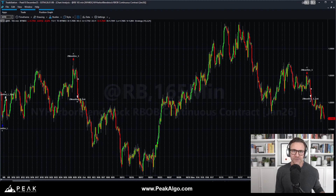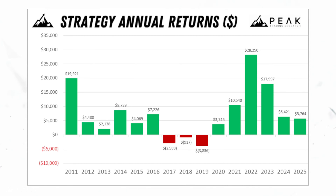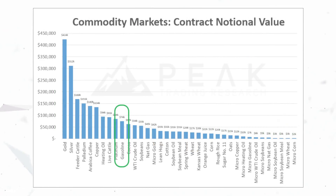Looking at annual returns for this systematic trading approach for the gasoline futures market, this strategy has had decent performance over the past 15 years. It has had positive returns in 11 of the past 14 full calendar years. It had a few years of underperformance from 2017 to 2019, but it has made money in six of the past six years. Average annual returns of $8,400 per contract, which represents about a 54% average return on 2.5 times margin.